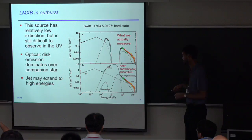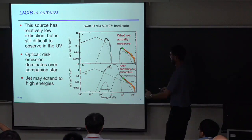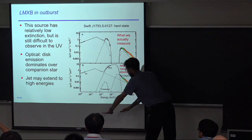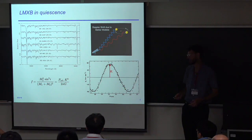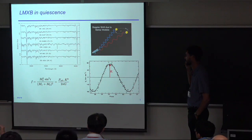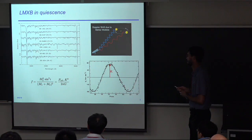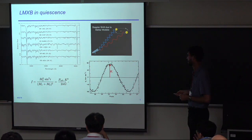In quiescence, you drop all this emission below the companion level, and you're left with emission from the companion. This is how we measure the masses of black holes in these systems — by measuring the mass function. You have to measure the orbital period and then the semi-amplitude of the radial velocity curve.